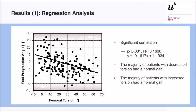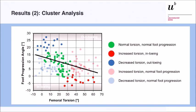The majority of patients with decreased torsion actually had a normal gait, and the majority with increased torsion also had normal gait. We performed a cluster analysis and found five typical patterns. The green group: normal torsion with normal foot progression angle. The dark red group: high torsion with in-toeing gait. The dark blue group: decreased torsion with out-toeing gait — as expected. But we also identified two distinct groups: light red — increased torsion but normal foot progression; and light blue — decreased torsion but also normal foot progression.